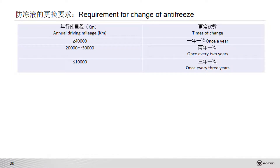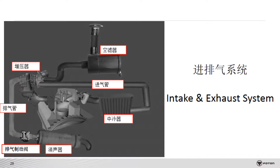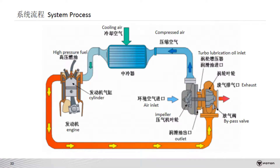Let me introduce the intake and exhaust system. Outside air enters and then goes into the air pipe, air cooler, and manifold, and finally enters the engine cylinders. The burned mixture gases pass through the turbocharger turbine into the exhaust pipe. Through the turbocharger compressor, air temperature will rise. The role of the intercooler is to reduce the temperature of the compressed intake air so that more air enters the engine, giving it more power.